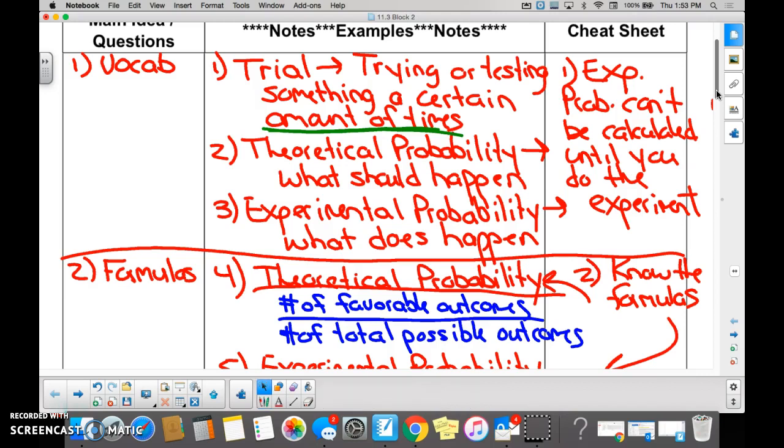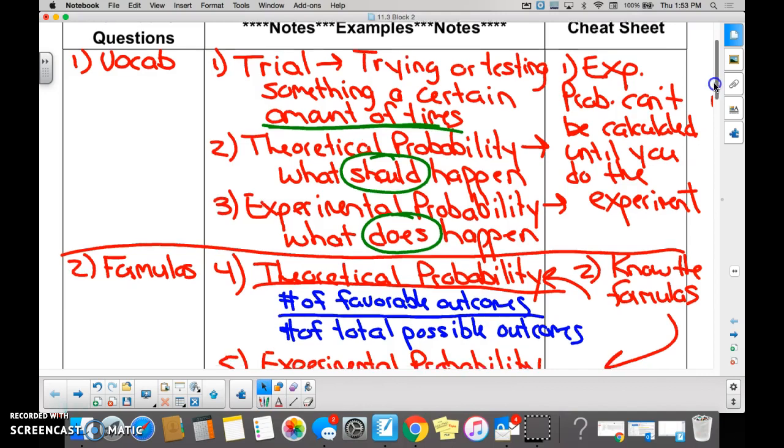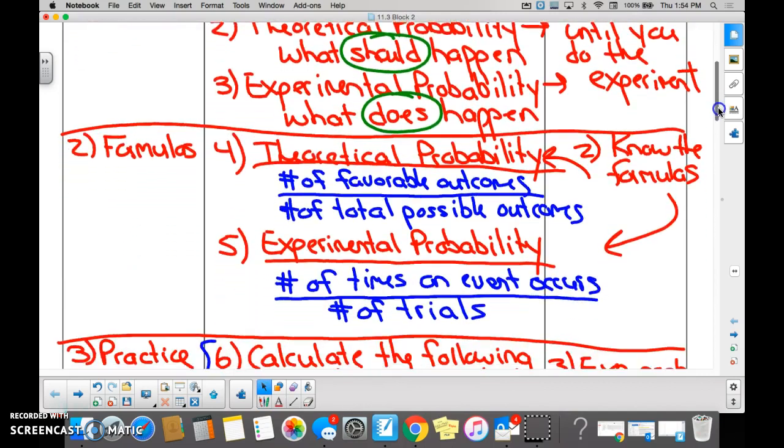Theoretical probability, the key word in theoretical probability is what should happen. The key word in experimental probability is what does happen. We cool with that? Yeah. These formulas need to be in your head as of like now.